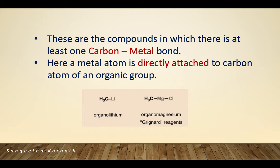As the name suggests, organometallic compounds should have a metal as well as an organic part. These are compounds which have a bond between the metal and the carbon — the metal atom is directly attached to the carbon atom. For example, in organolithium compounds, carbon is directly attached to lithium. Organomagnesium compounds are generally referred to as Grignard reagents.